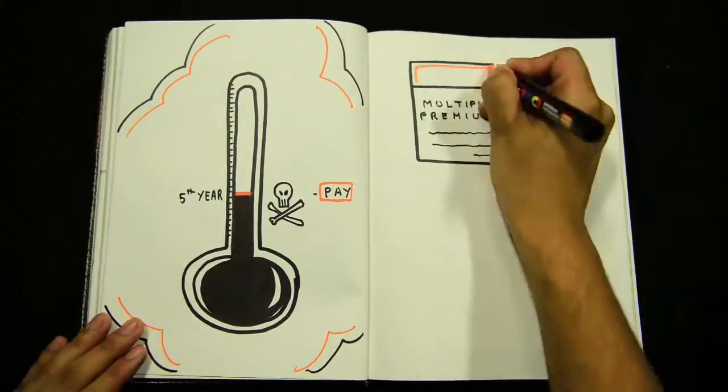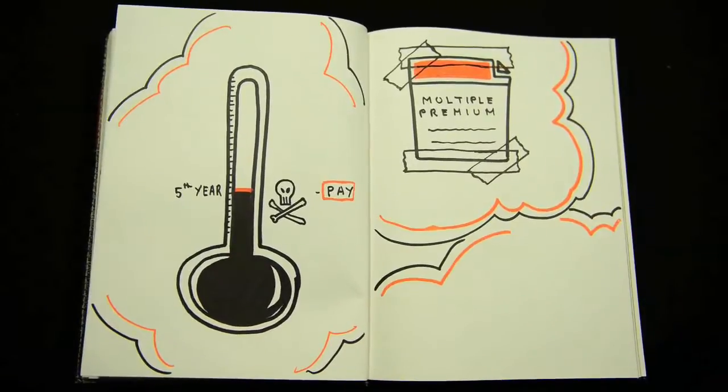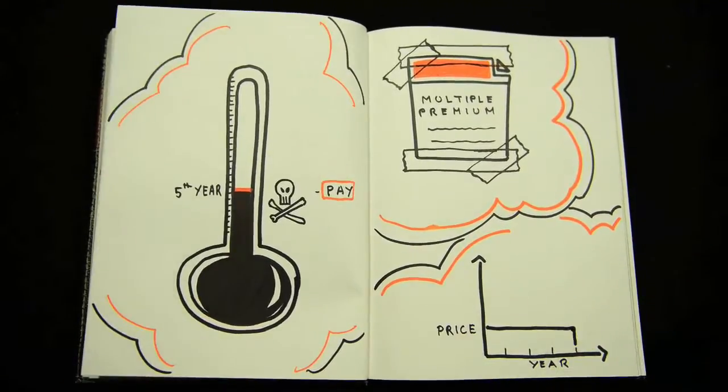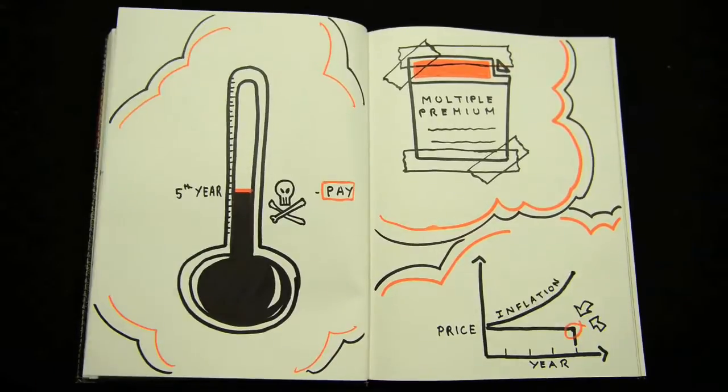Regular premiums are also fixed in amount. This means, over time, the premium that you pay will appear cheaper if you factor in inflation.